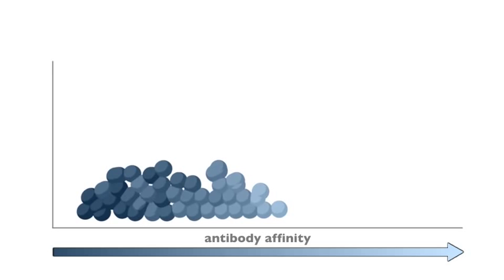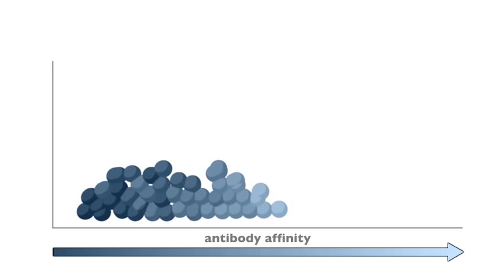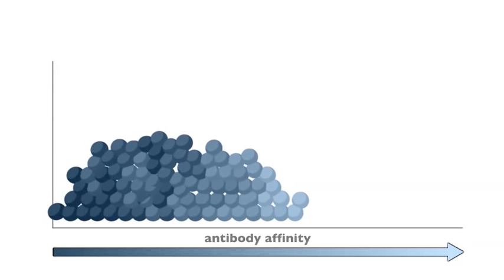Only the highest affinity centricytes remain from the variable population after competitive selection. They will continue to mutate and divide. Again, the range of affinity provides the basis for selection by competitive binding. As unsuccessful cells undergo apoptosis, affinity increases with each generation.